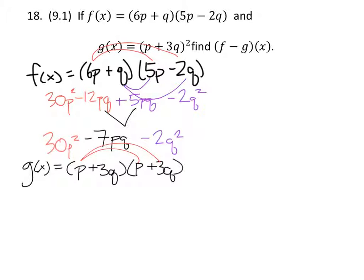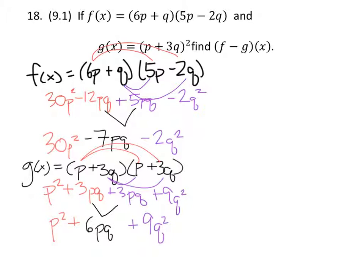We've got p squared plus 3pq, and then we've distributed the 3q to get 3pq plus 9q squared. Now to fully simplify this we'll combine the two terms with pq's and there we have it.